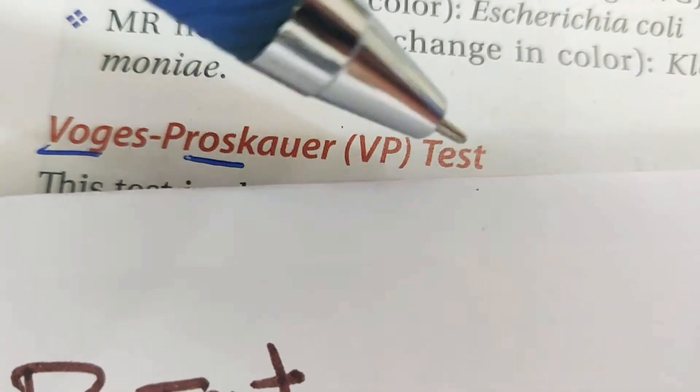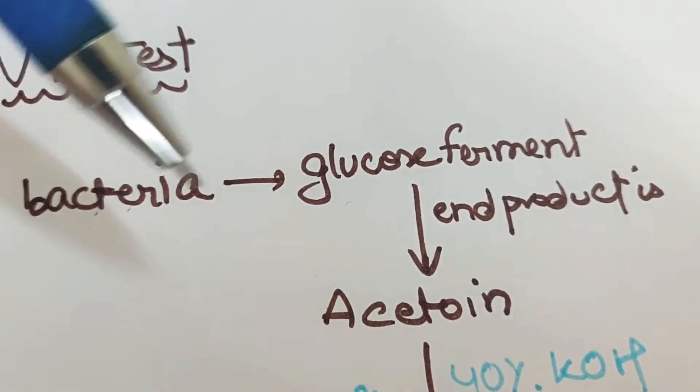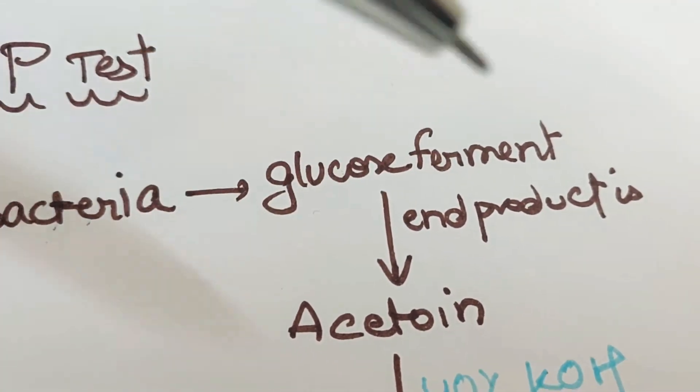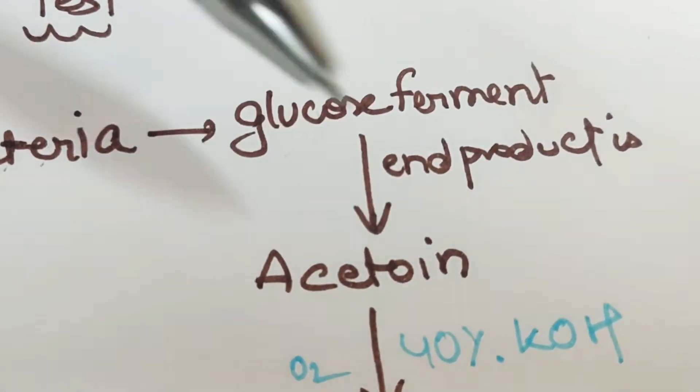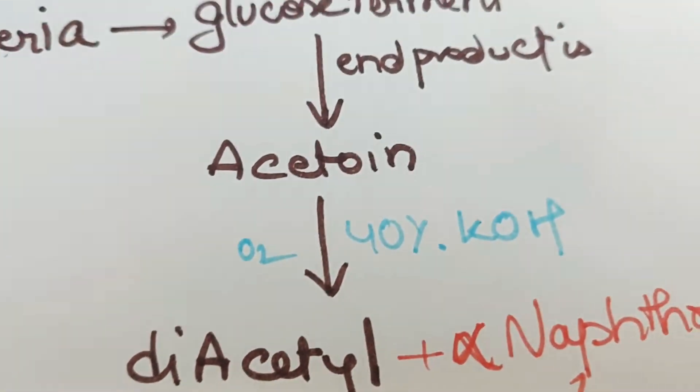This video is about the VP test. Some bacteria do glucose fermentation and there is formation of acetoin as the end product of glucose fermentation. This acetoin on exposure to atmospheric oxygen and 40% potassium hydroxide,